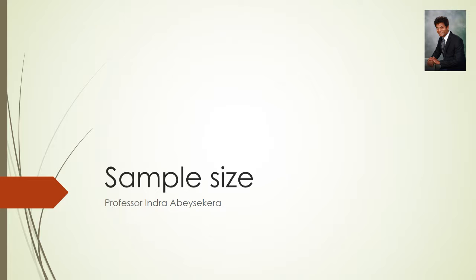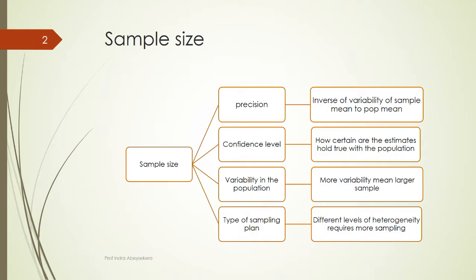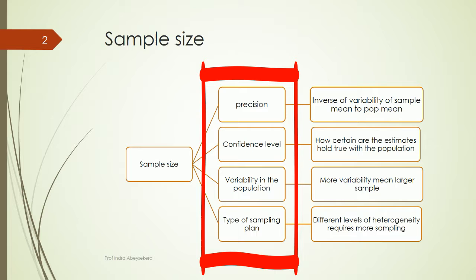I am Professor Indra Abhishekala. Let's look at sample size. When we talk of the sample size that we should choose for our research study, we have to look at four aspects: precision, confidence level, variability in the population, and type of sampling plan.